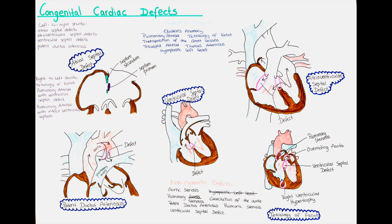Do we know what causes heart defects? Simply said, no. However, research shows that genetics and environmental factors play a role. Around 10 gene mutations have been identified that seem to cause cardiac defects. An infection with rubella virus during pregnancy, or exposure to industrial chemicals, or the consumption of alcohol or cocaine, increase the risk. Also, medications have been identified that appear to increase the risk for their development.